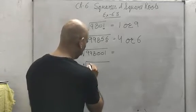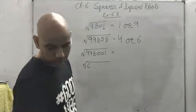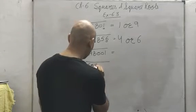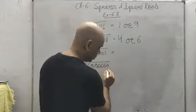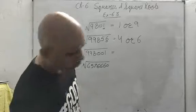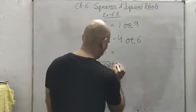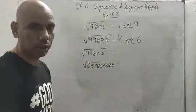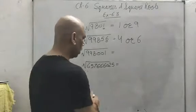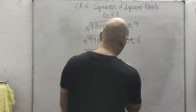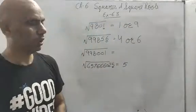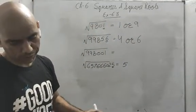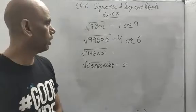Then there is a very big number — 657666025. The unit digit is 5, and 5 comes in the square of 5 only (5² = 25). So the unit place will surely be 5 and nothing else.